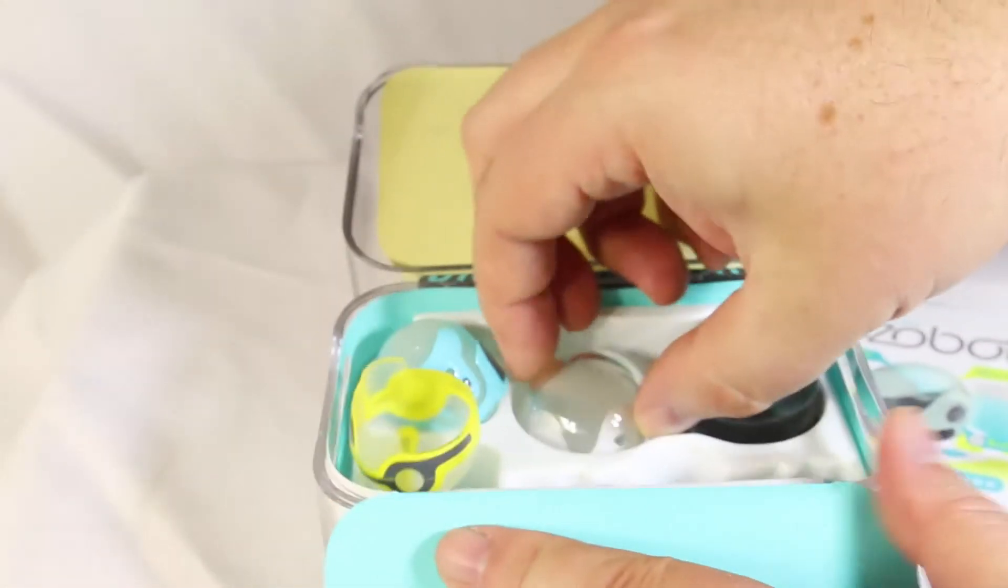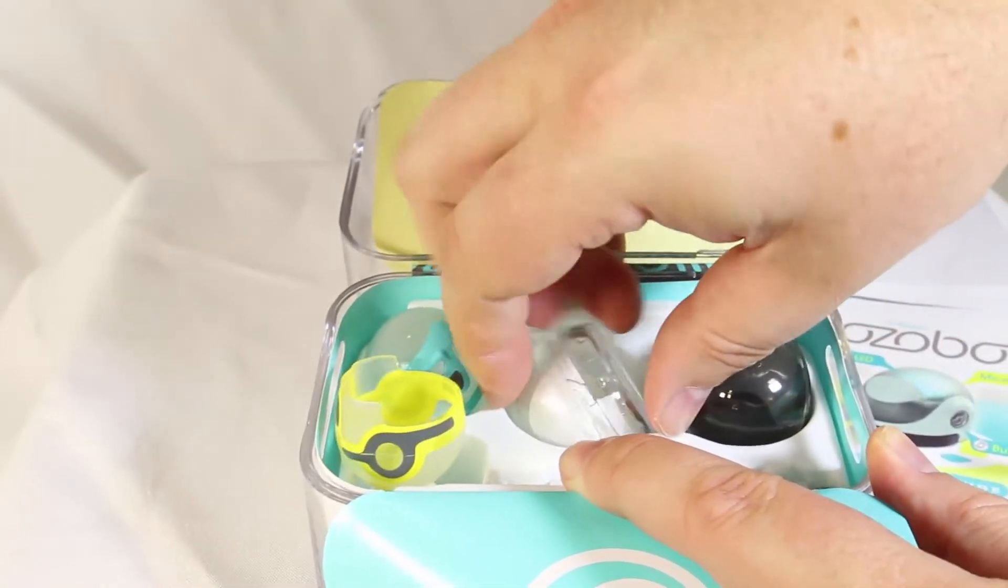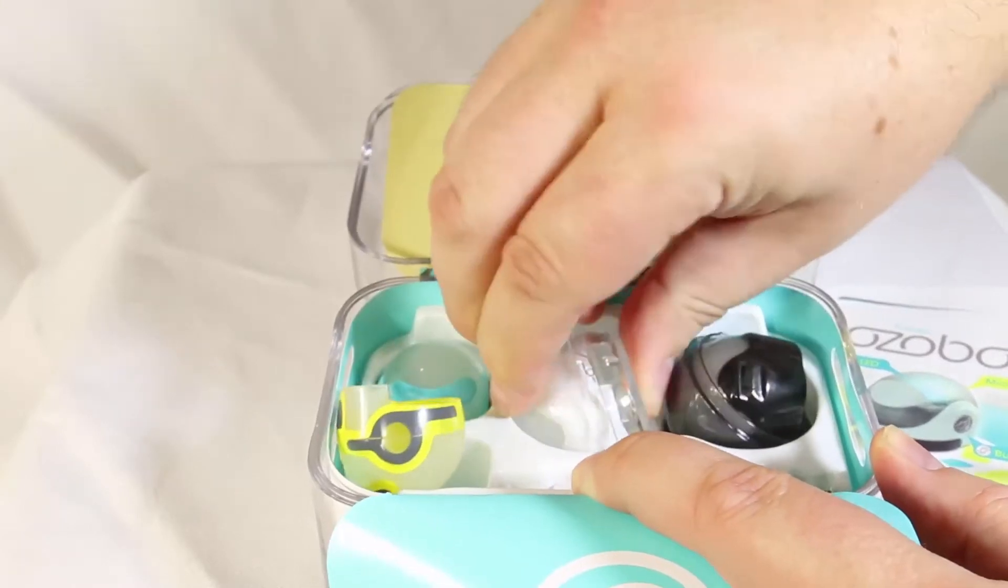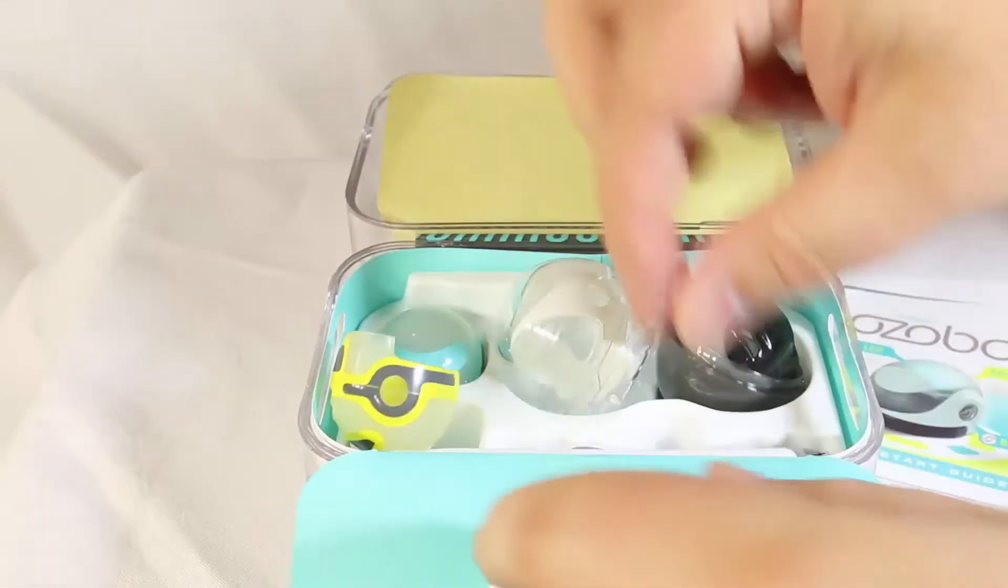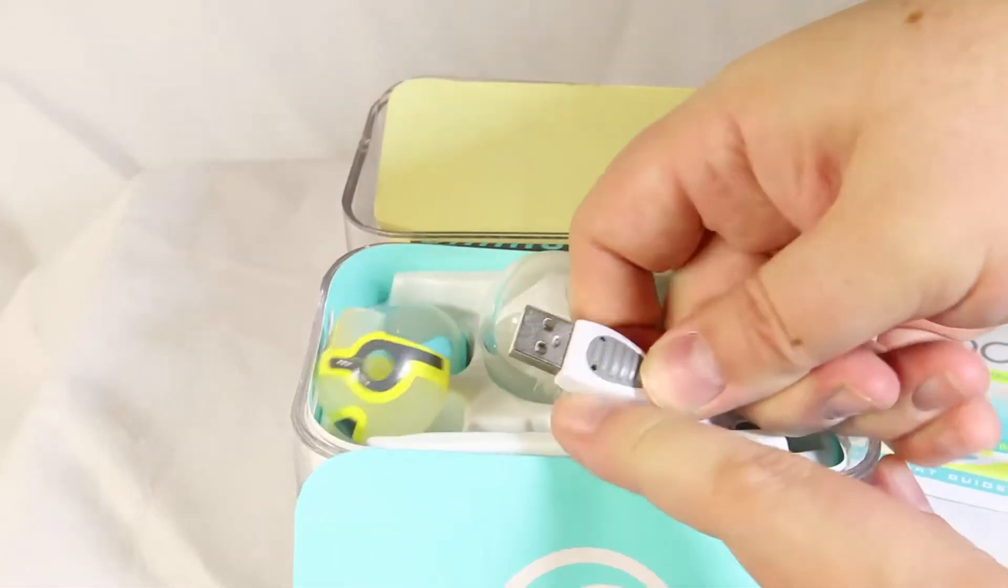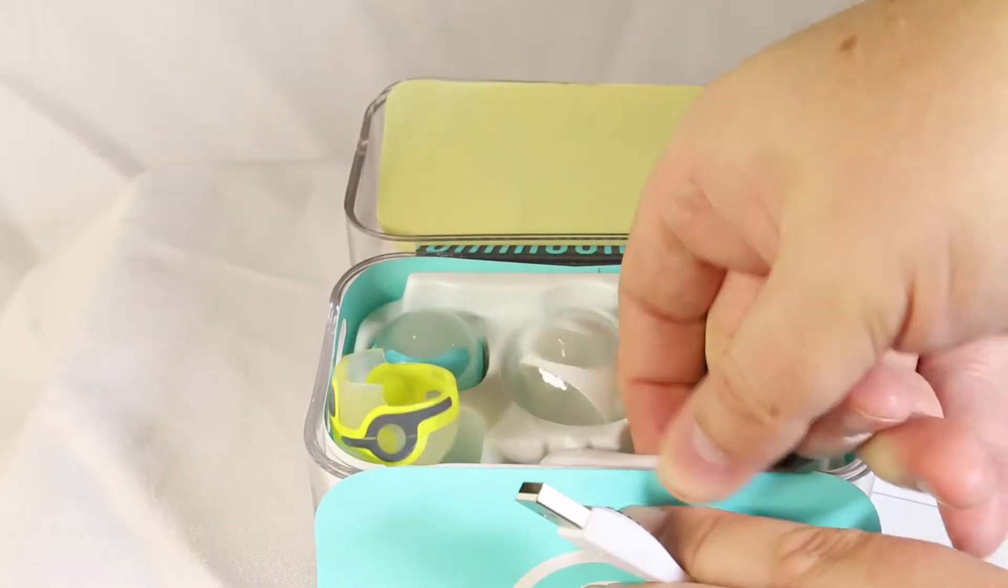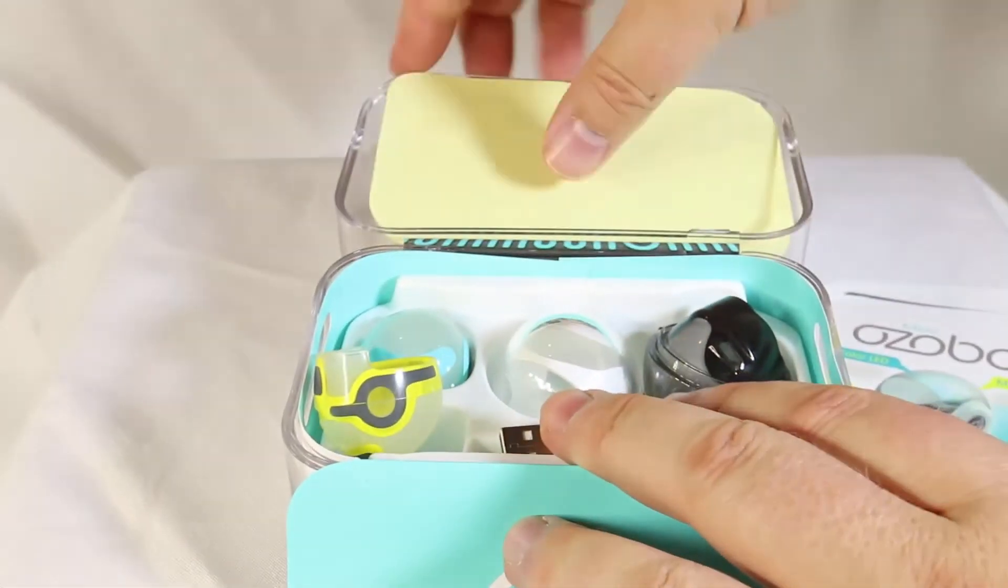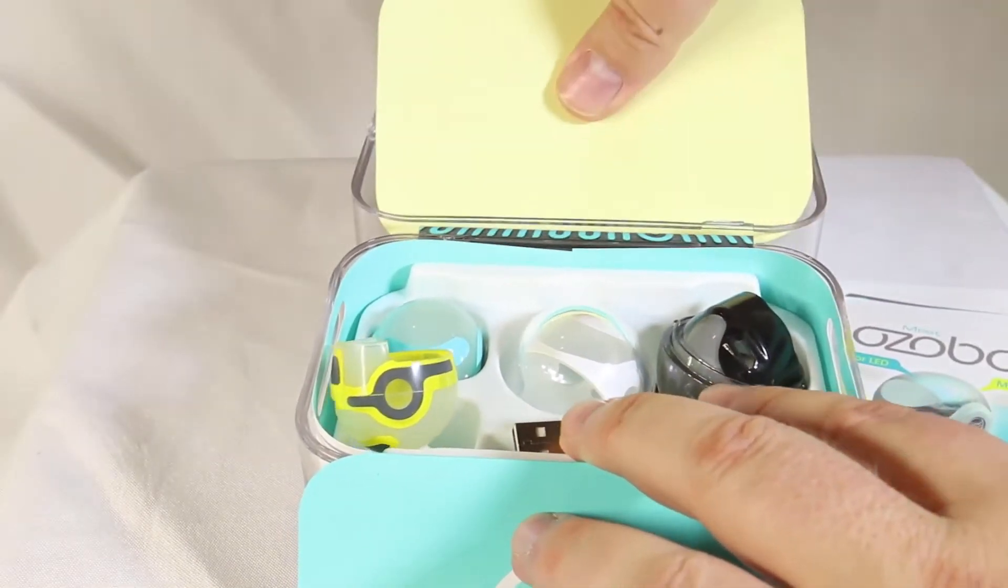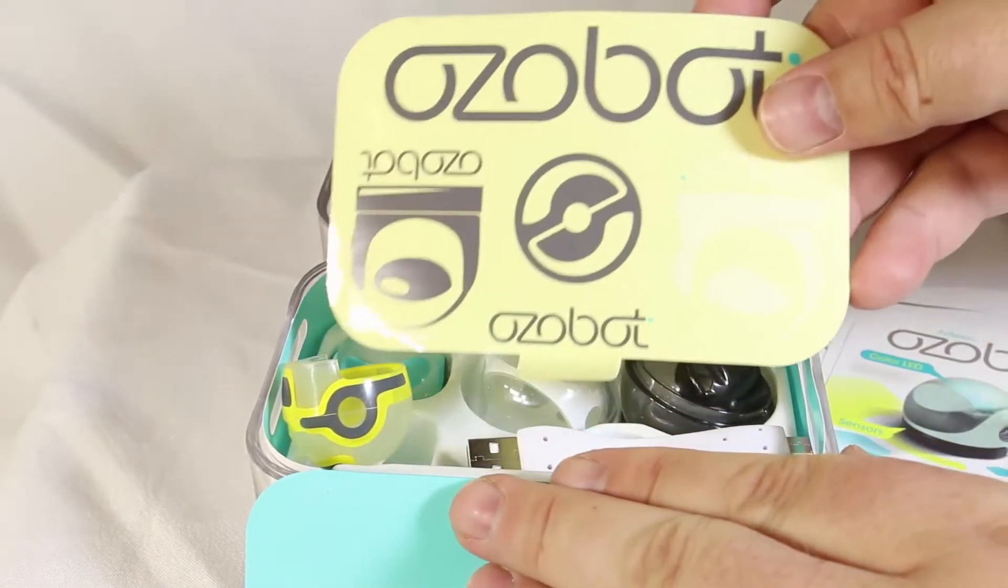On their website video, you can see people have attached little mohawk hairs to the top, made faces on them—things that are really personal and funny. In the case, we got plenty of cables, extra covers that you can put on the Ozobots, labels, and everything else you could possibly need. Let's break these babies out and show you what they look like.